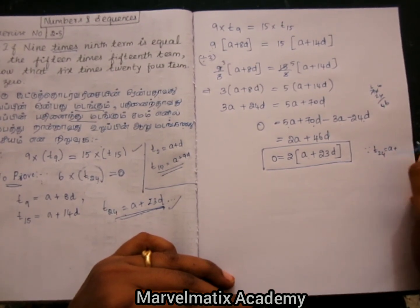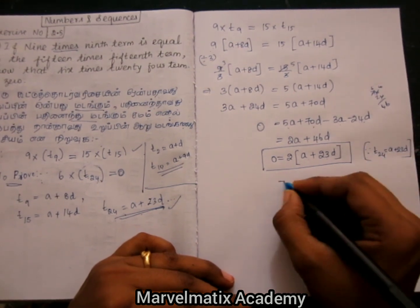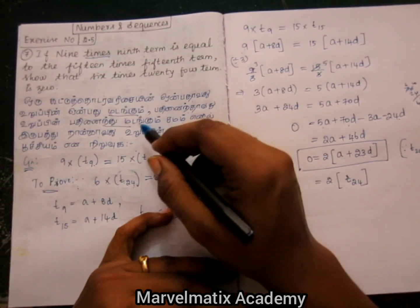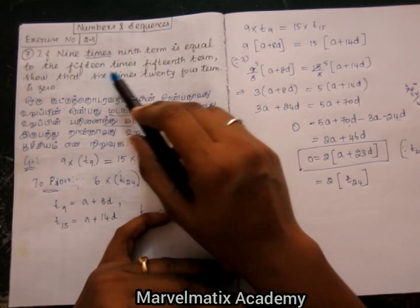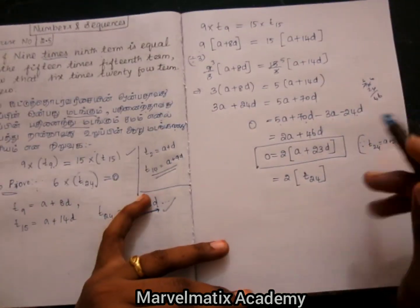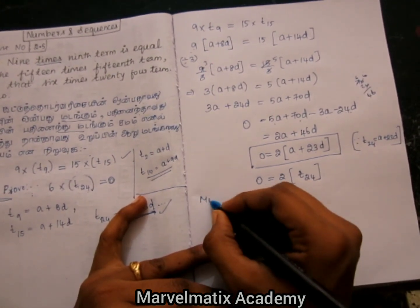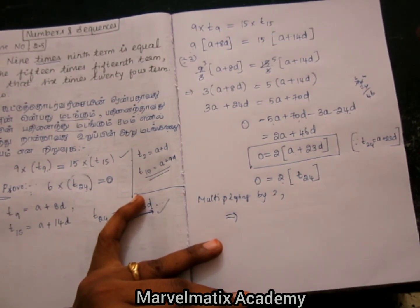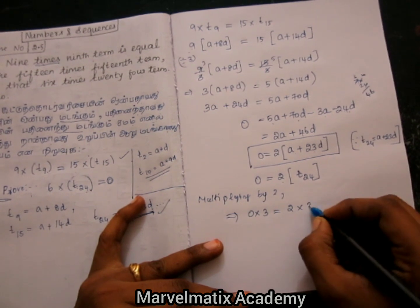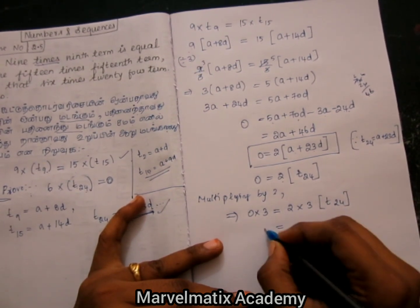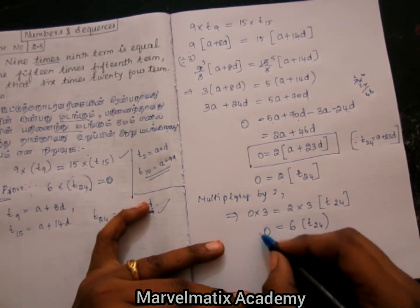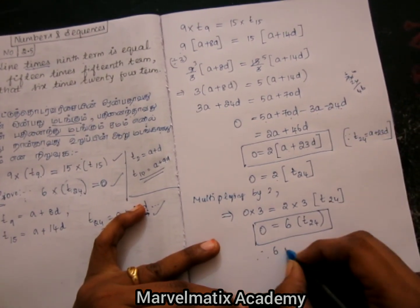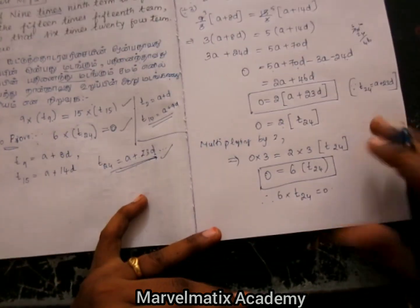Which is equal to 2 into (a plus 23d), which is equal to 0. So 2 into (a plus 23d) which is T24 — equal to 0. That gives 2 into T24 equals 0, then 2 times 3 times T24 equals 0, and 2 times 3 is 6, so 6 times T24 equals 0.